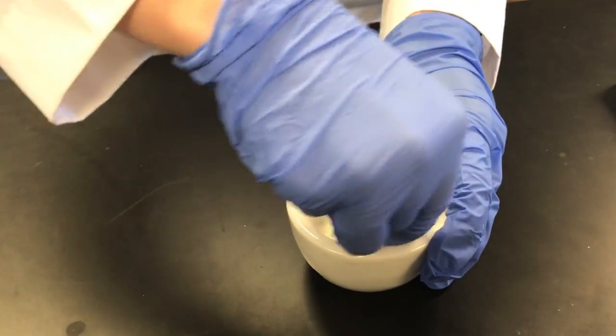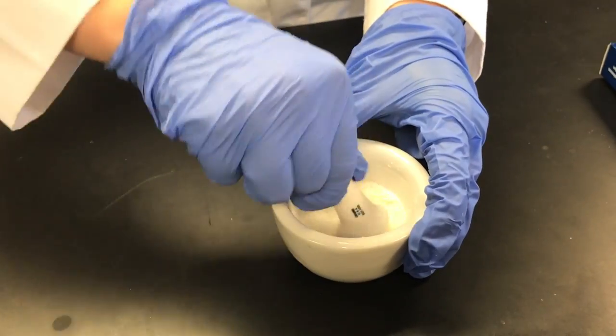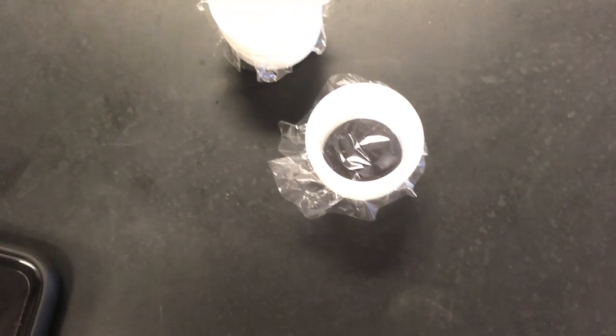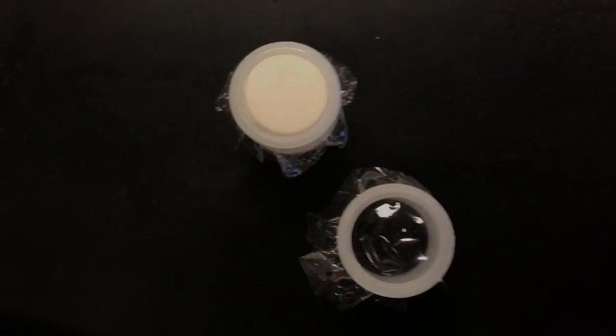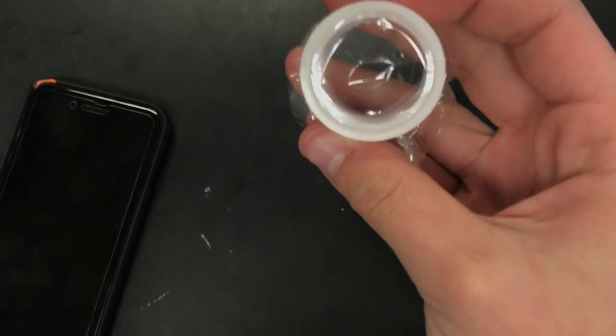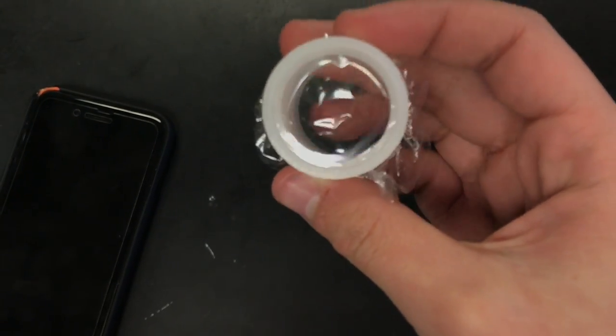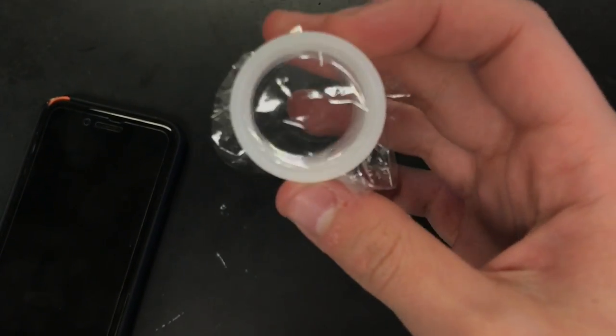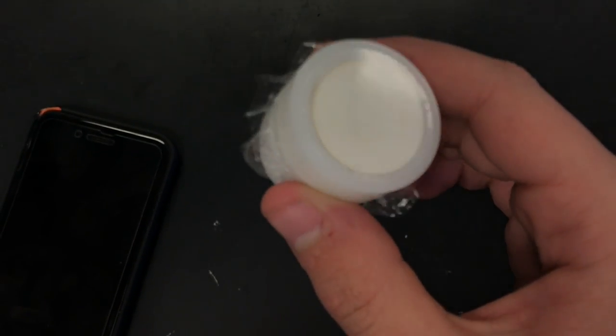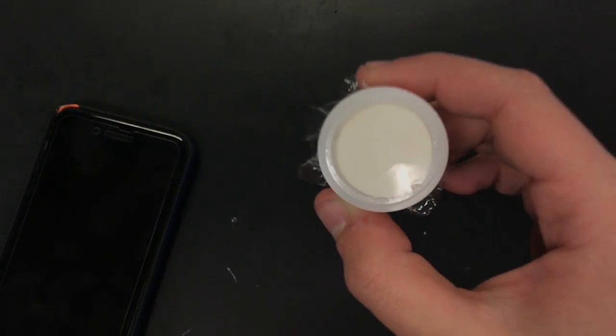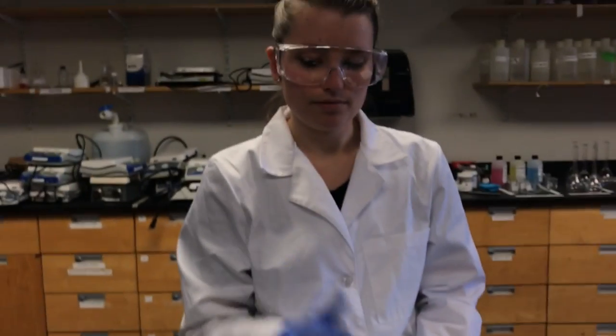Now we're going to show you how to assemble the XRF cup. Here is an example of a good and a bad XRF cup. As you can see on this one, the plastic isn't taut and it's very loose, and that will not give you a good reading, while on this one it's very tight and smooth. That's what you're looking for. Now Kristen is going to show you how to do that.